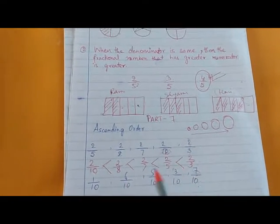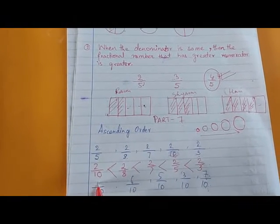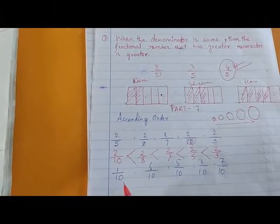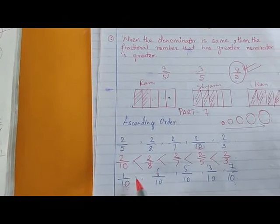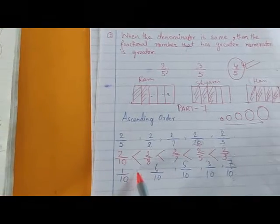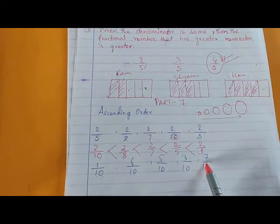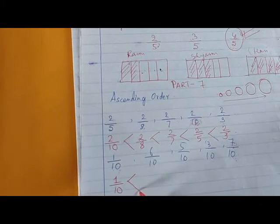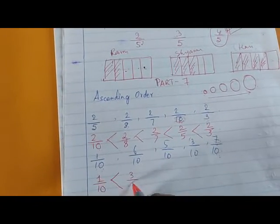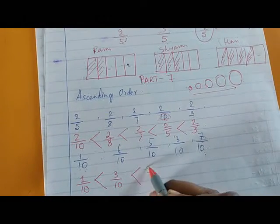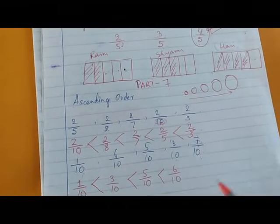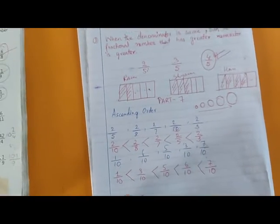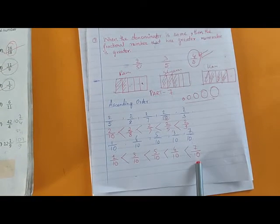Here, 7 upon 10 is the largest because 7 is the greatest numerator. And 1 upon 10 is the smallest because 1 is the smallest numerator. So in ascending order we arrange: 1 upon 10, then 3 upon 10, then 5 upon 10, then 6 upon 10, and 7 upon 10 is the biggest — the largest one.